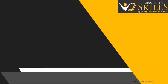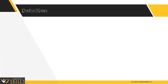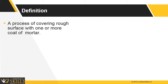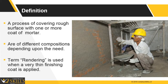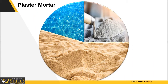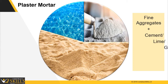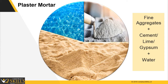In this lecture, we are going to talk about plastering work. Plastering is a process of covering the rough surface of work done with mortar. Plastering can be done from different materials depending upon the need. The term rendering is used when a very thin finishing coat is applied. Mortar used for plastering is a heterogeneous mixture of sand, cement, and water, which should be mixed in a prescribed ratio to get the mortar of required proportion in masonry and plastering.